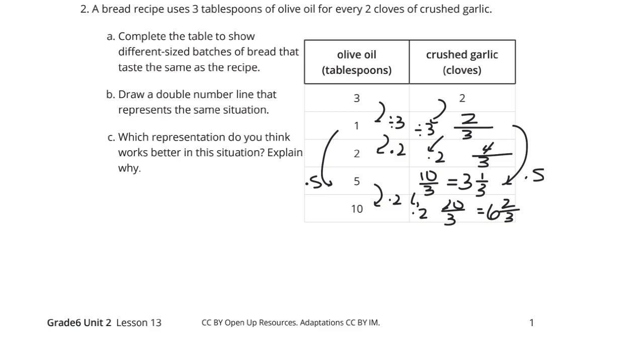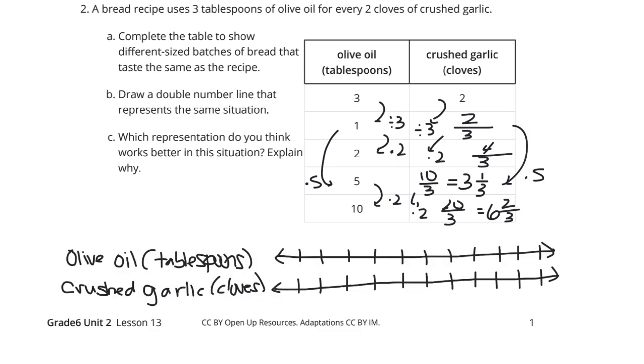Draw a double number line that represents the same situation. Well, here is a double number line diagram with olive oil tablespoons and crushed garlic cloves. And we can start with our 0, 0. And for our olive oil, let's go 1 with the 2 thirds. We have 2 with the 4 thirds. We have the 3 with the 2. 4 we don't have, we could figure it out, but 5 we have as 10 thirds. And all the way down here, 6, 7, 8, 9, 10. We have 20 thirds or 6 and 2 thirds, however you want to write it.